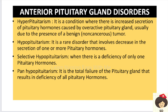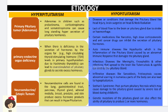Hypopituitarism can be divided into two types: selective hypopituitarism, where there is deficiency of only one pituitary hormone, and panhypopituitarism, which is total failure of the pituitary gland where there is deficiency of all pituitary hormones. Coming to the etiology, in hyperpituitarism it can be due to a primary pituitary tumor.